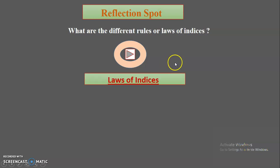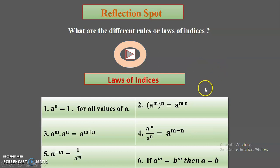Okay, now let's see — hope you all have written or recalled them. The important laws of indices: the first one is a raised to 0, the value is always equal to 1 for any base a. The second rule is a raised to m, raised to n, can be rewritten simply as a raised to m into n — the two indices get multiplied.